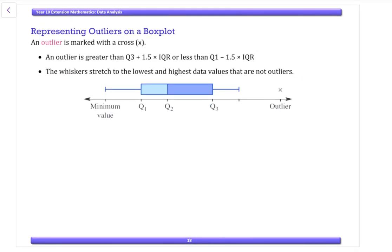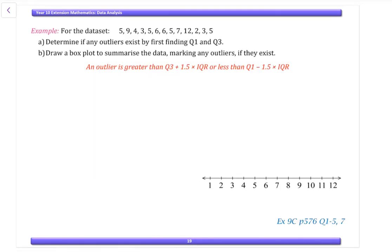So how would we represent outliers on a box plot? Well, an outlier is marked with a cross. And we calculate our outliers by, or seeing whether we identify outliers, I should say, by using Q3 plus 1.5 times IQR for our higher one, and Q1 minus 1.5 times IQR for if we have any low outliers. So that's what we use for identifying our outliers. Now the whiskers stretch to the lowest and highest data values that are not outliers. All other values stay the same. The only thing you're going to change is your minimum or your maximum, or both, depending on where the outlier is.